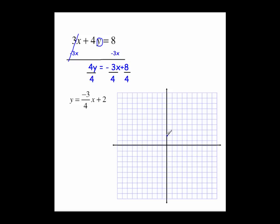It has a y-intercept of 2. It has a slope of negative 3 over 4. Counting down 1, 2, 3, to the right 1, 2, 3, 4. Put your second dot. Count it again.